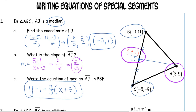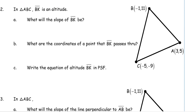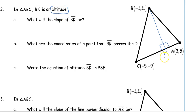In number 2, we're looking at triangle ABC again, and this time segment BK is an altitude. An altitude drops straight down forming right angles, and right angles are formed by perpendicular lines. To find the slope of BK, I don't have the coordinates of K — and since altitudes have nothing to do with midpoints, I can't find K using the midpoint formula.